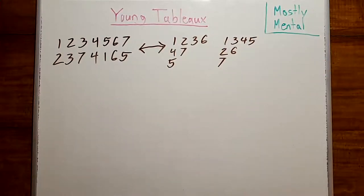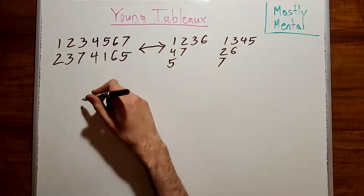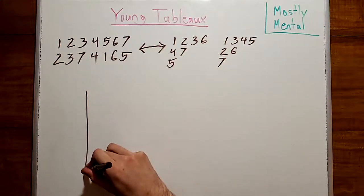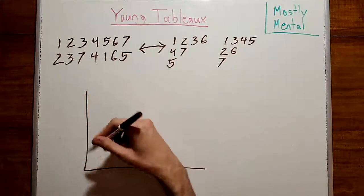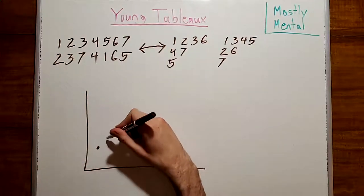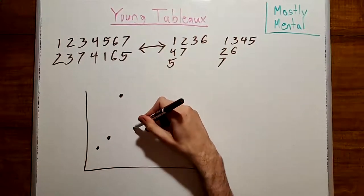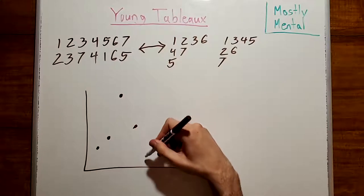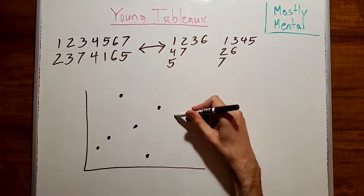The first thing we'll do is we'll take these pairs of numbers and we'll interpret them as coordinates in a plane. So, here we have 1, 2, then 2, 3, then 3, 7, 4, 4, 5, 1, 6, 6, and 7, 5.